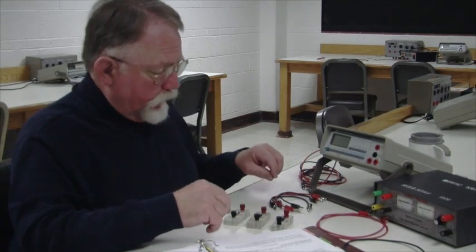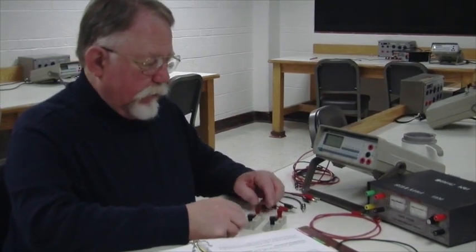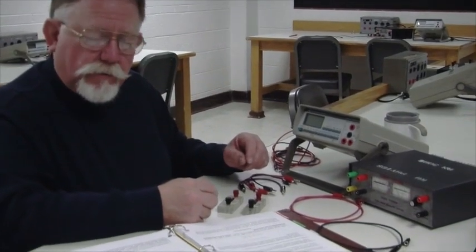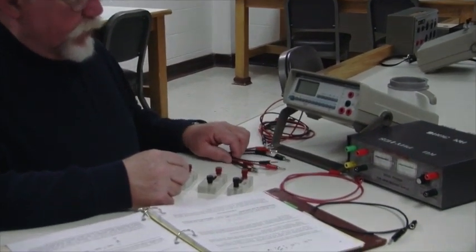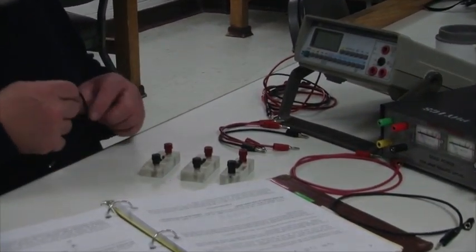To start off, we're going to measure voltage in a parallel circuit, which is one of the two common ways of connecting components in a circuit. I have three resistors here. They're ordinary conductors. It just takes a little more voltage to cause a current to pass through them.